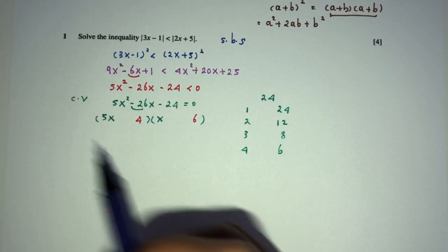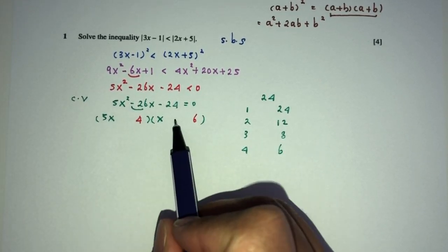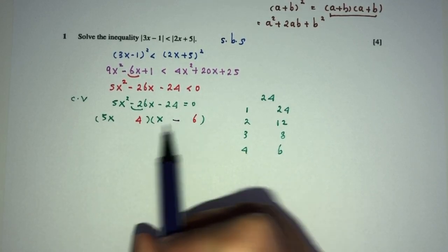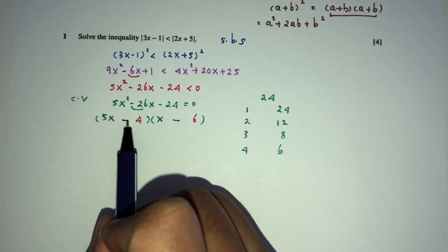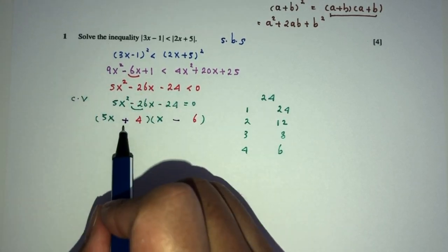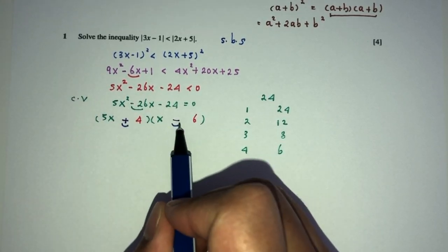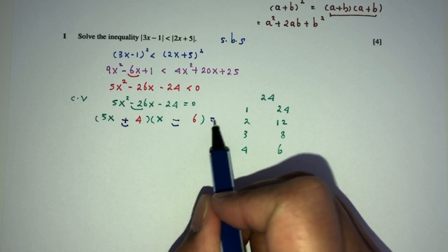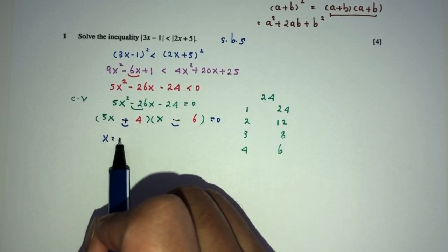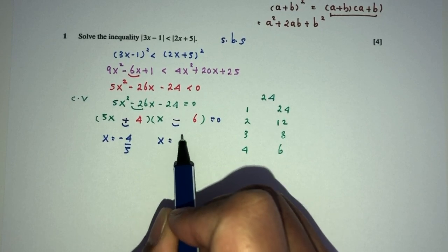You can see clearly we have to have minus 26. That has to be minus 30, so 5 times minus 6 is minus 30, plus 4 should be minus 36. Let's check: plus times minus is minus, and here we have minus, so good to go. So x will be the value of minus 4 over 5, and x will be the value of 6.